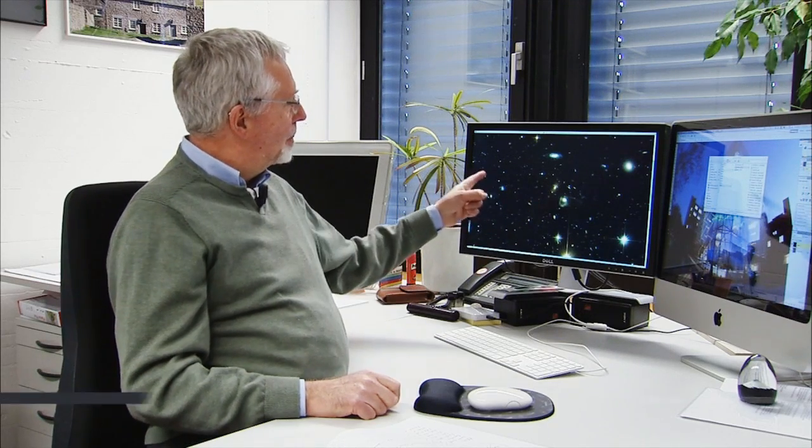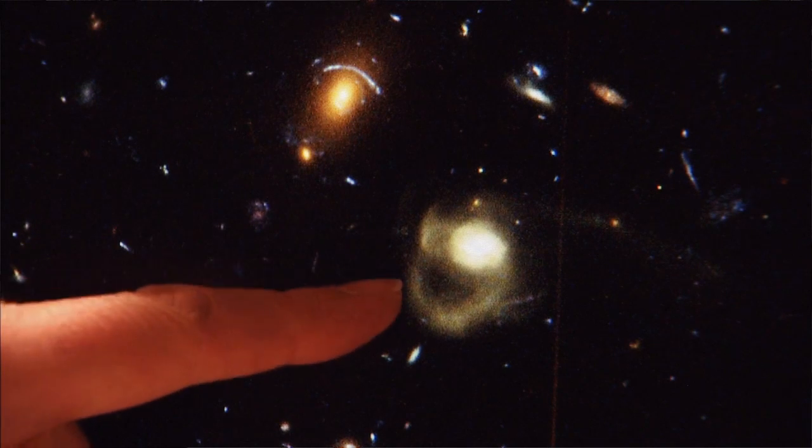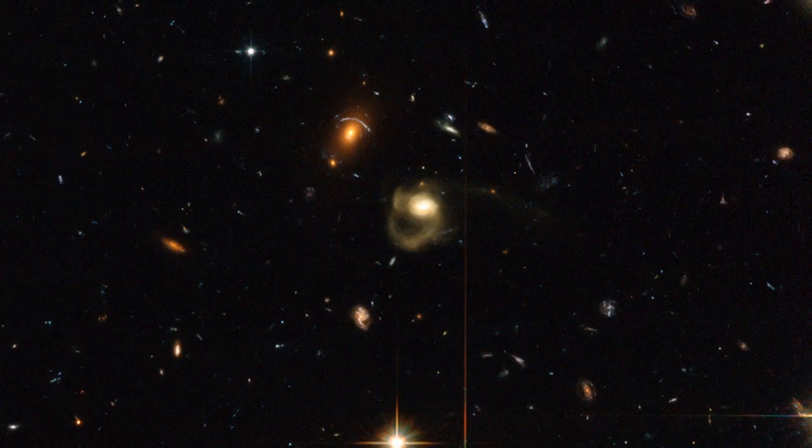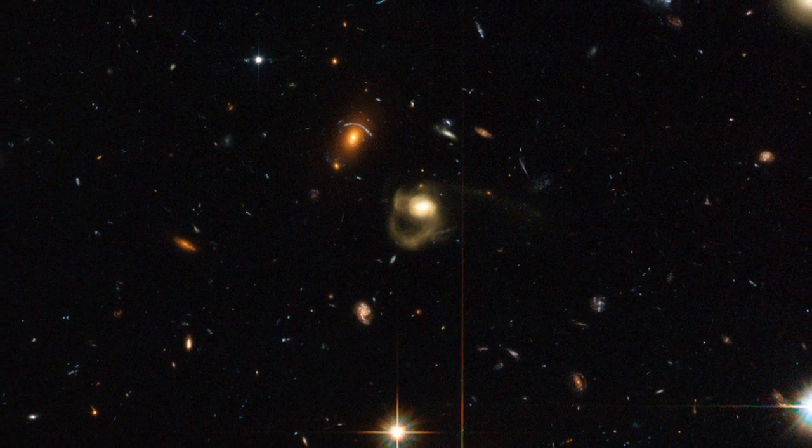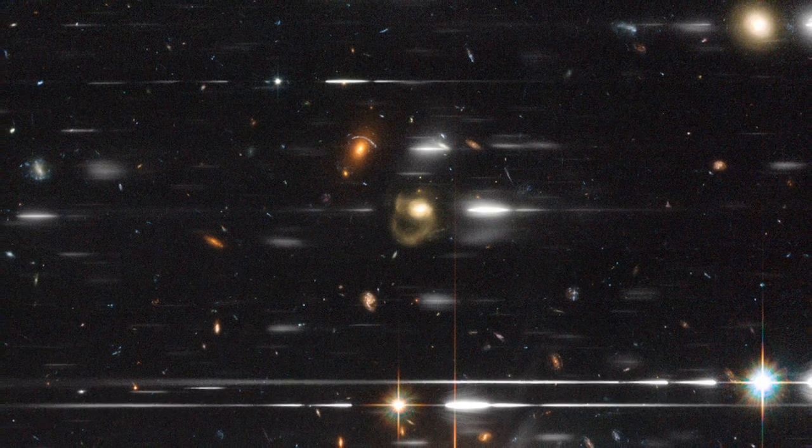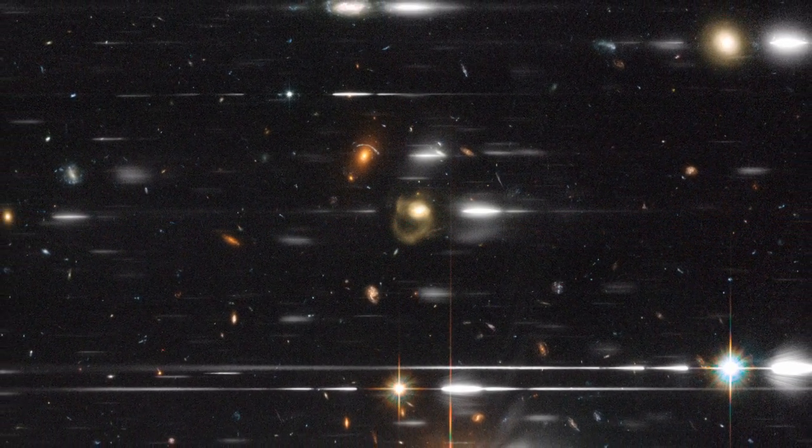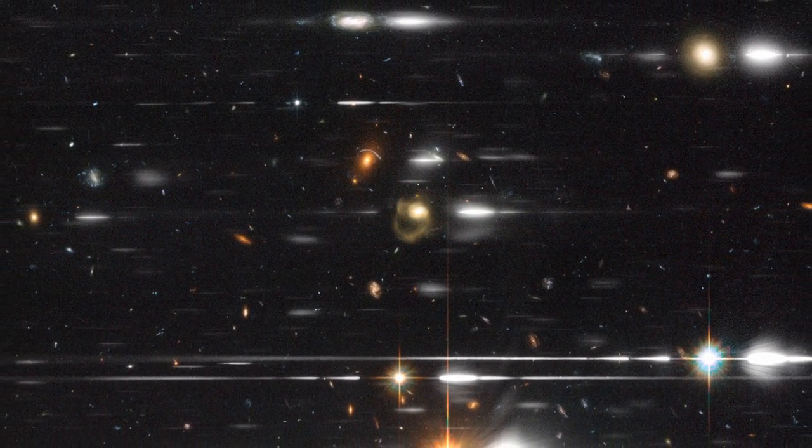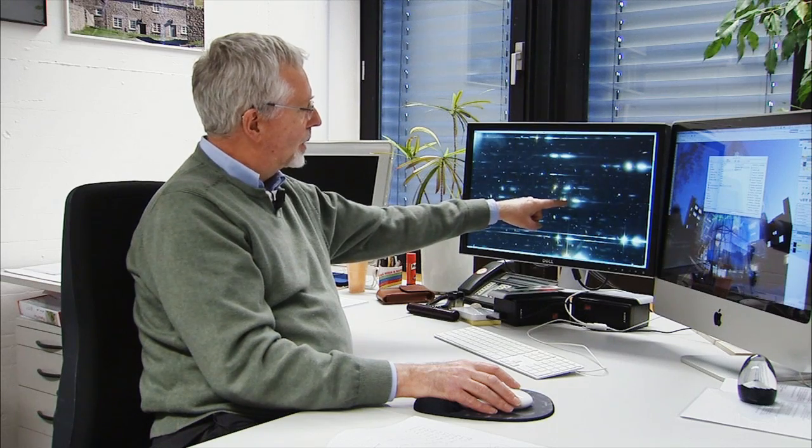So here we have a Hubble image here, and it contains a range of objects of different brightnesses and ultimately different distances. But if we just focus on this image here, which is a galaxy in the centre, we can see how we add the spectroscopic information. But what we do is disperse the light of all those objects in the field into spectra, which you can see in white here. And so for this object here, we see the spectrum spread out on one side, and from the distribution of light in that spectrum, we can learn a lot about this galaxy.